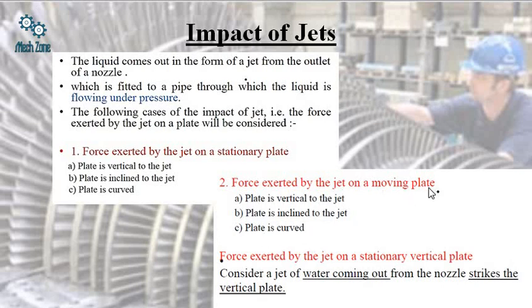Second is the force exerted by the jet on a moving plate. In the earlier section, we had the plate as stationary, but now it will be moving with some velocity V. Plate is vertical. All the three cases are still repeated here.